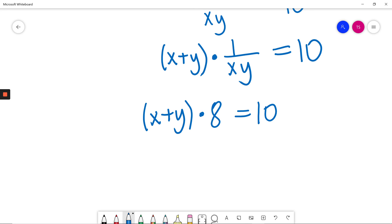At this moment I will divide both sides by 8, both sides of the equation by 8. So I will have x plus y will be equal to 10 over 8, which is also equal to 5 fourths.